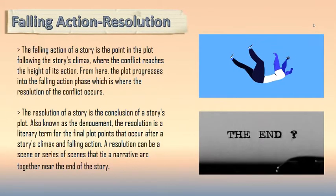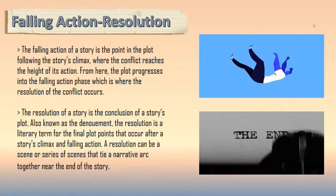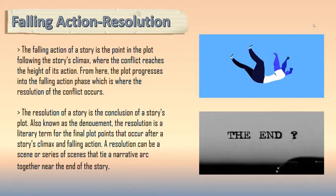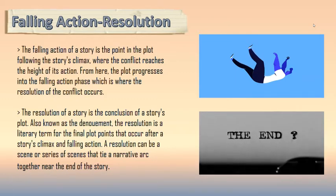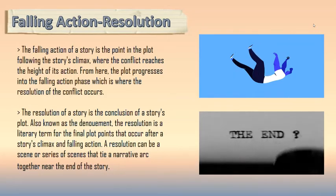Last from plot development is falling action to resolution. The falling action is the point in the plot following the story's climax, where the conflict reaches the height of its action and then the plot progresses into the falling action phase, where the resolution of the conflict occurs. The resolution is the conclusion of a story's plot, also known as the denouement — the final plot point that occurs after the story's climax and falling action, tying the narrative arc together near the end of the story.